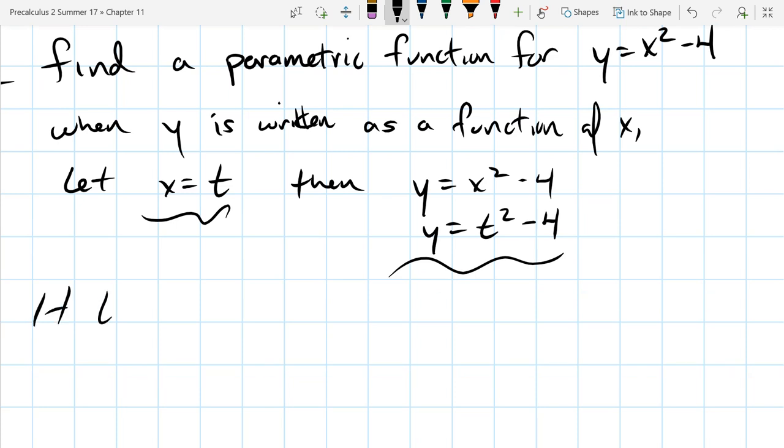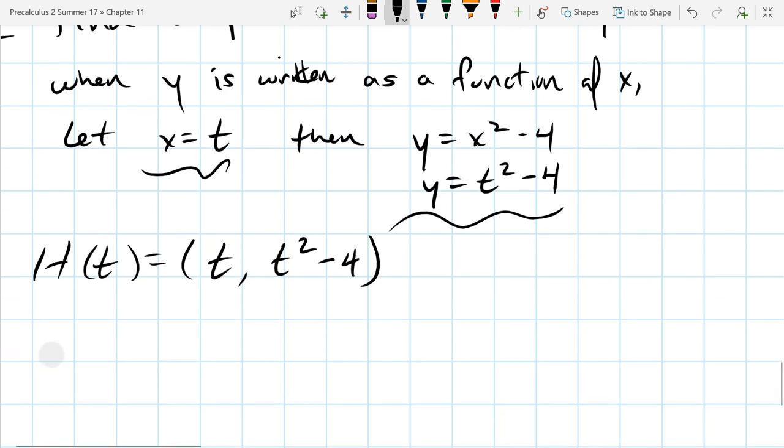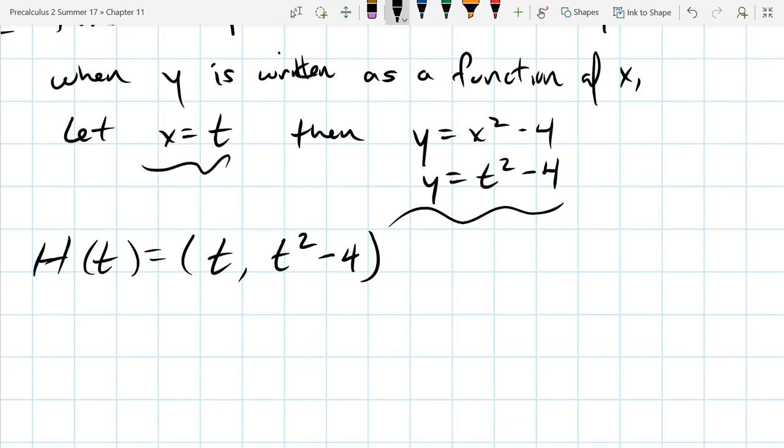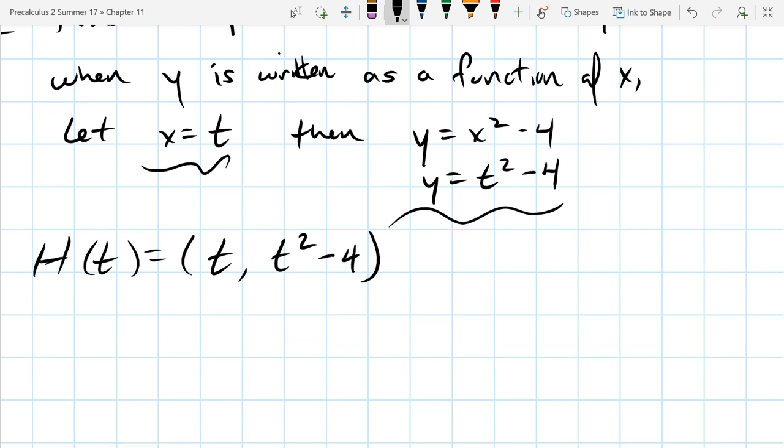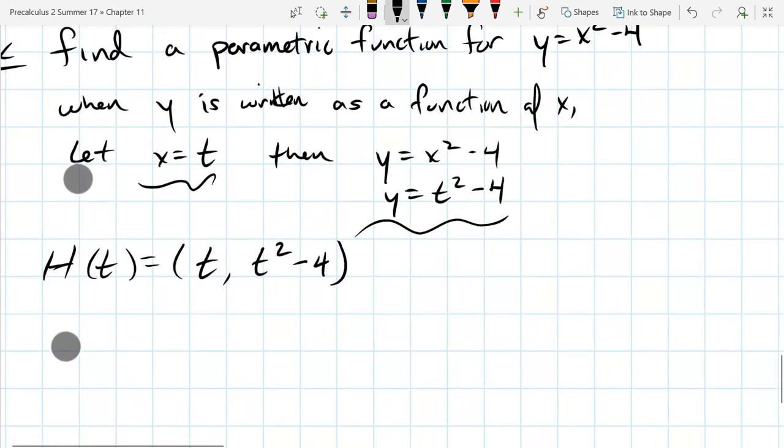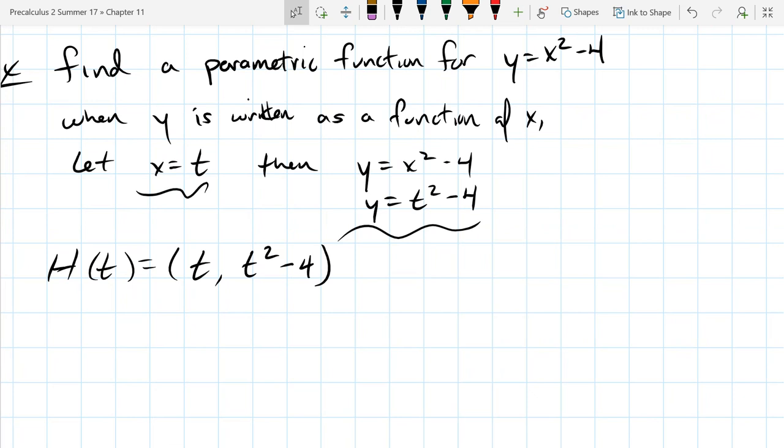So I'll just write this, h of t is equal to, x function is t, the y function, t squared minus 4. That's really all there is to converting as long as y is a function of x already.